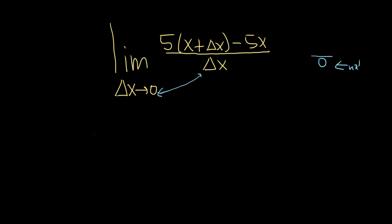So we need another strategy, and that strategy is simply to distribute. So we'll go ahead and write the limit sign again. Then we have the delta x approaching 0. And we can just distribute this 5. So 5 times x is 5x, and then 5 times delta x is simply 5 delta x, and then minus 5x.